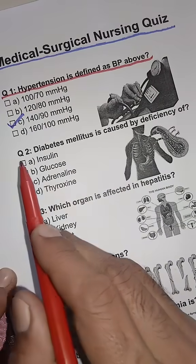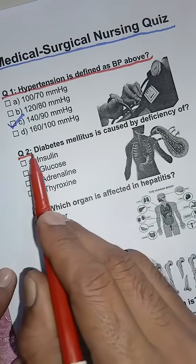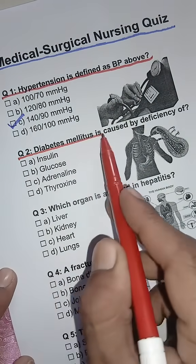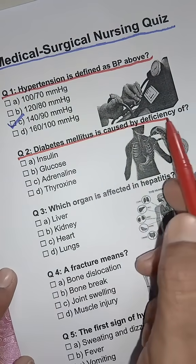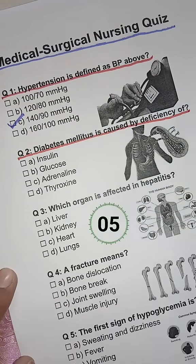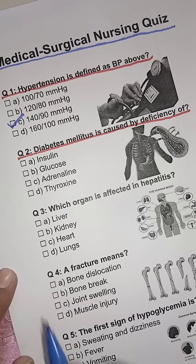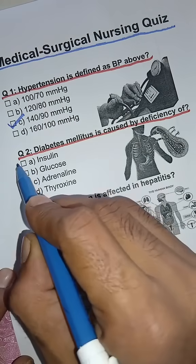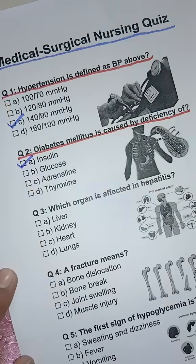Question 2. Diabetes mellitus is caused by deficiency of? Answer: A. Insulin.